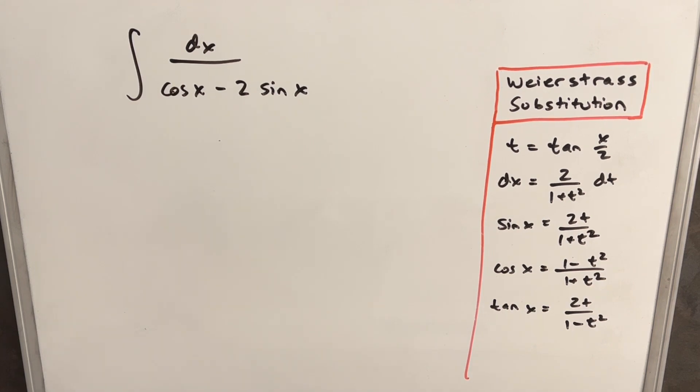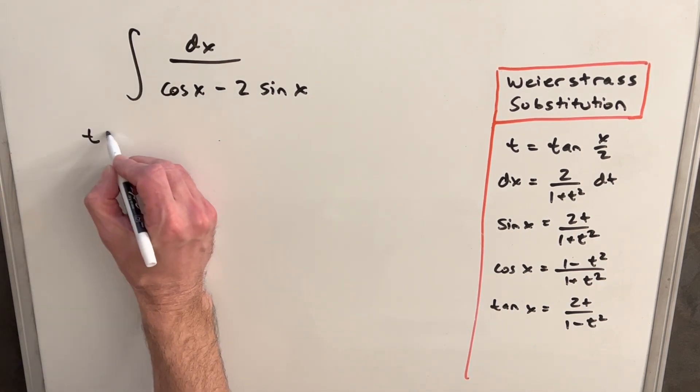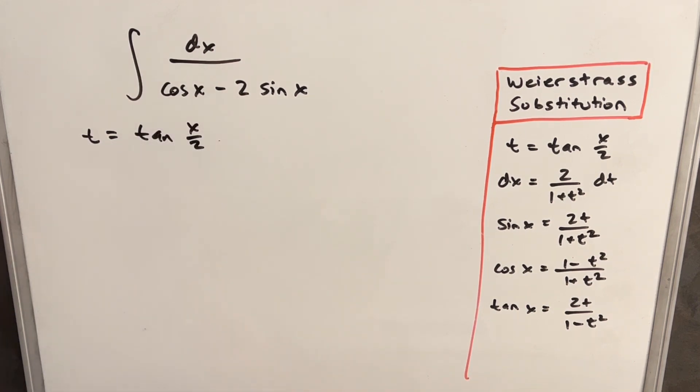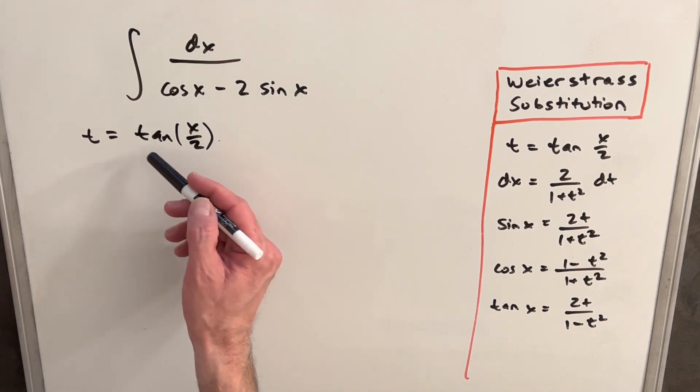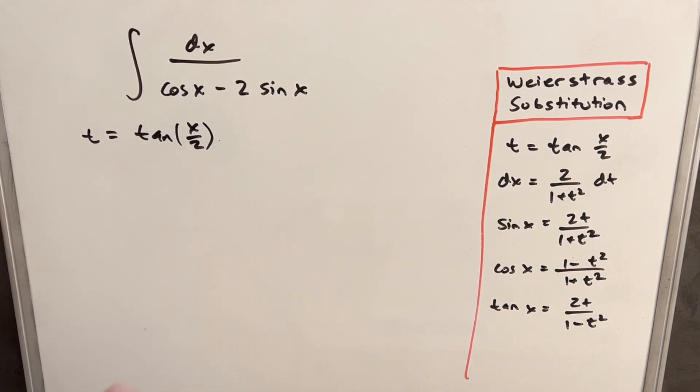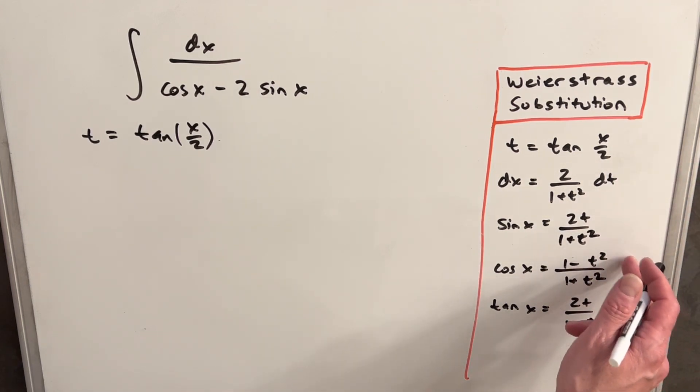Let's get started. Our substitution is going to be t equals tan of x over 2. The confusing thing about this method is we're making a substitution using something that we don't have in the integral. We don't have a tangent or a half angle. It doesn't really make sense except for the fact that we've derived all these other values that we can use in our substitution that's going to make this work.